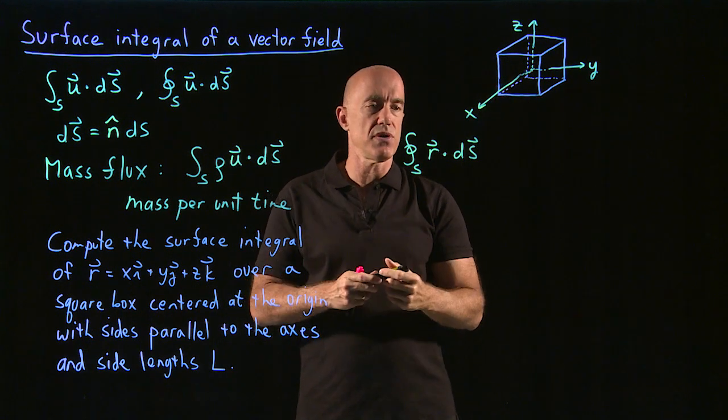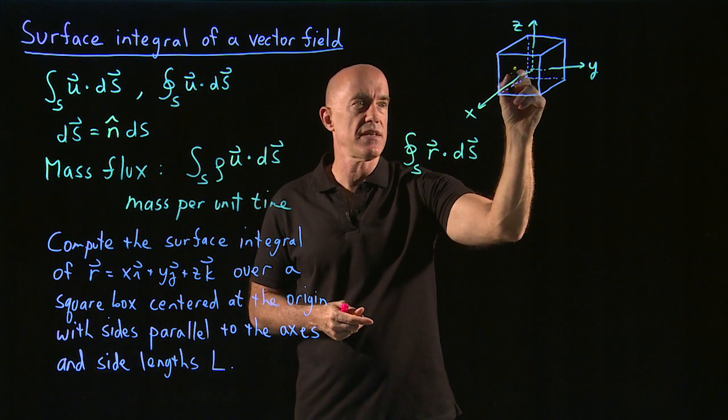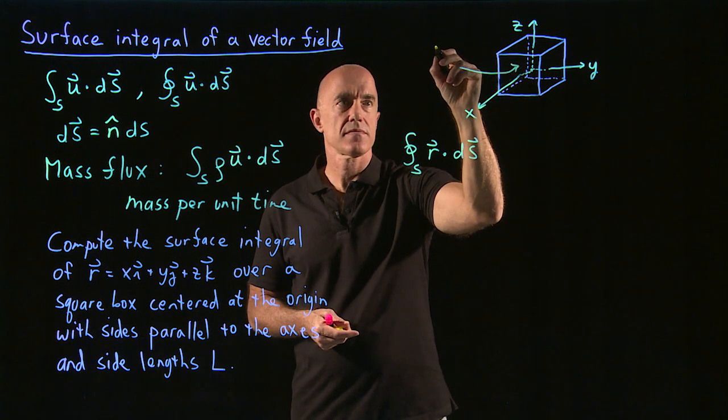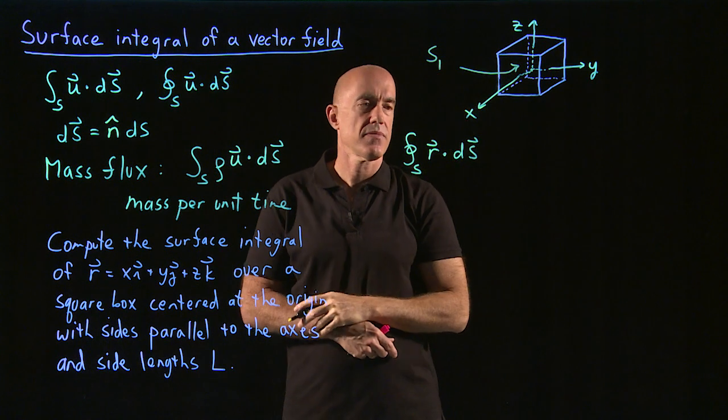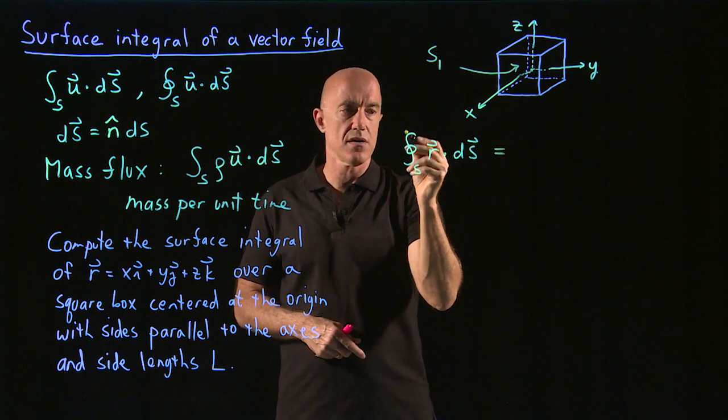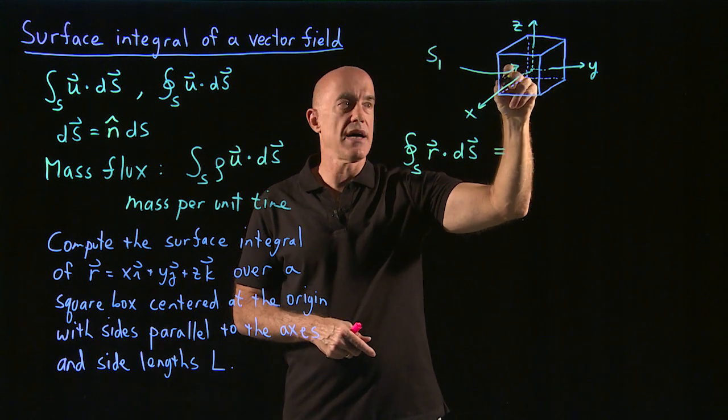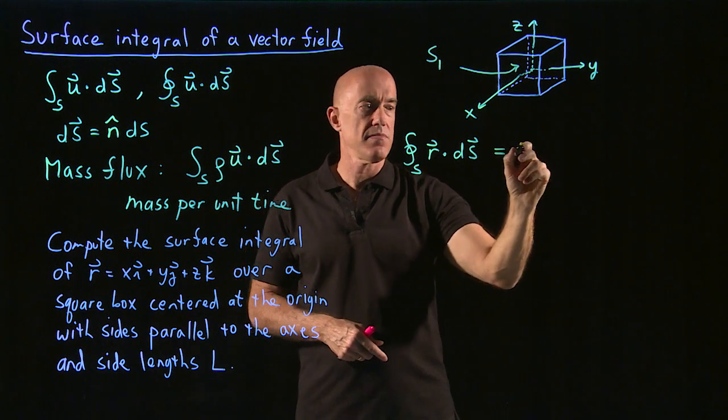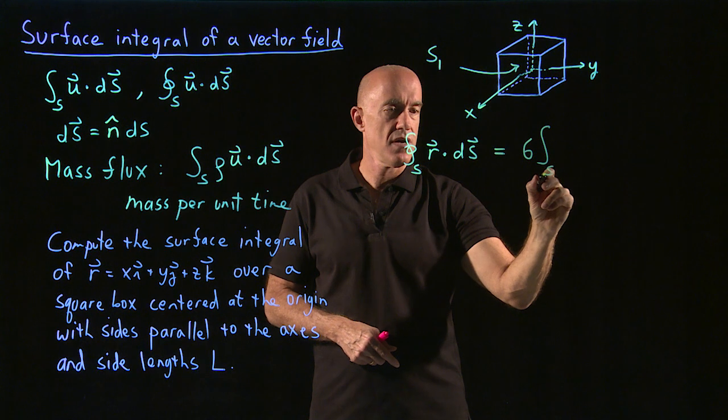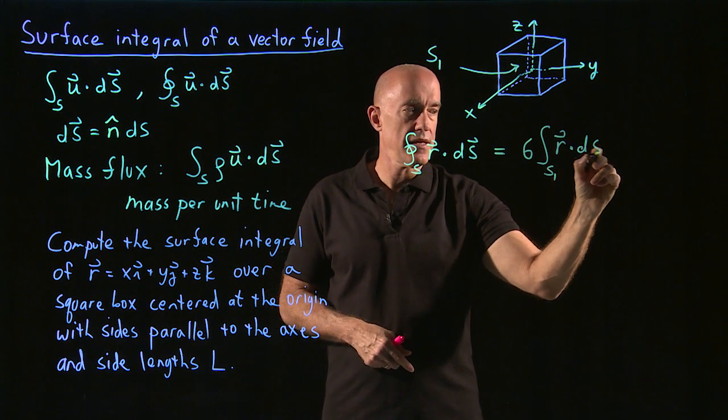So let's just compute this across one of the faces. So let me call this face out here, we'll call that S1. So we'll compute the surface integral on S1. But we have six of them. So this will be six times the surface integral on S1 of r dot ds.